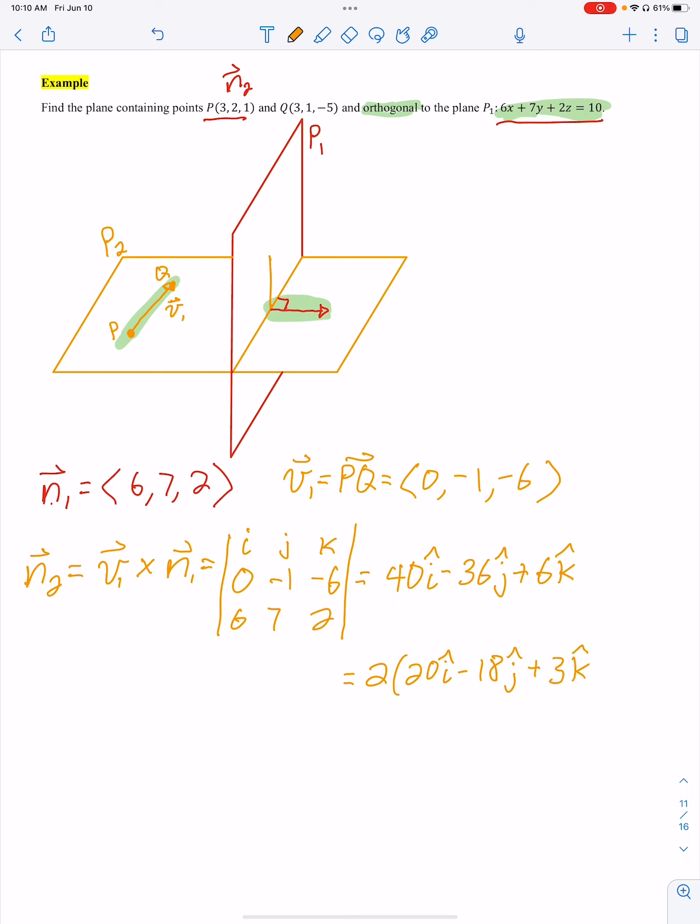And remember, we can take out numbers or multiply our directional numbers as long as it just has to do with direction and not distance. Well, the normal vector is just direction. We don't care about how long it is or anything.